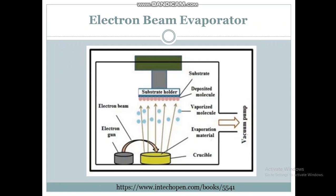In the electron beam evaporator technique, an electron gun hits the target material, causing the material to evaporate. The vapors strike the substrate, which is positioned in a specific direction, and the material is deposited on it.